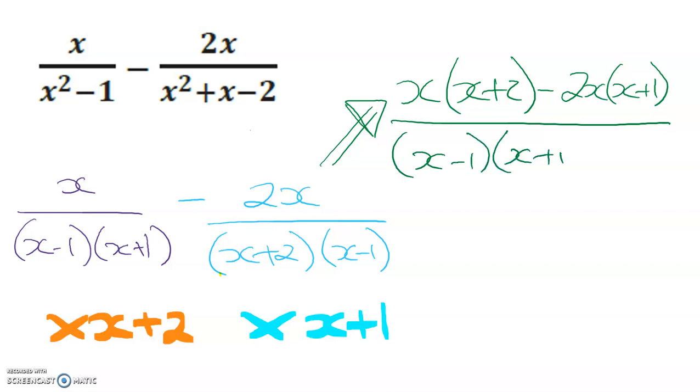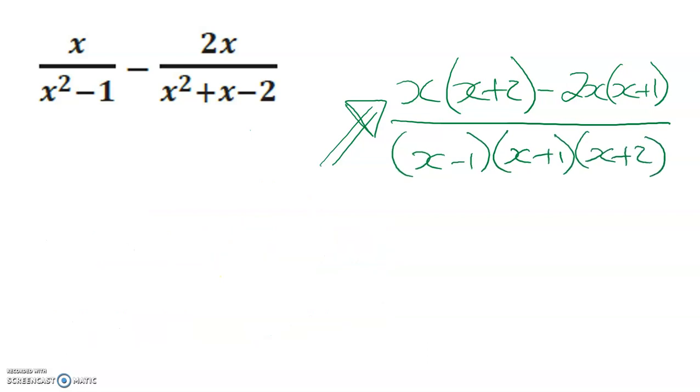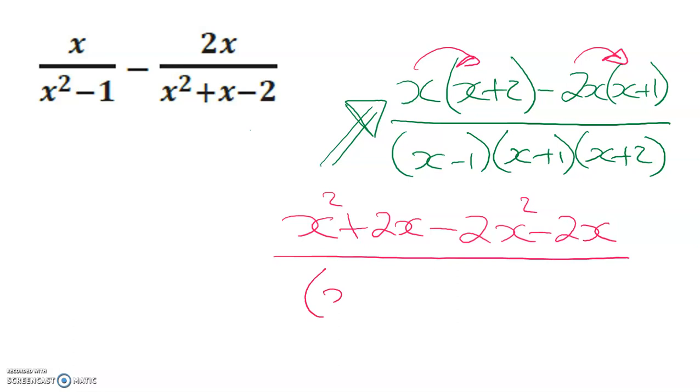I'm going to distribute each bracket. So I end up with x² + 2x minus 2x² - 2x all over (x-1)(x+1)(x+2).